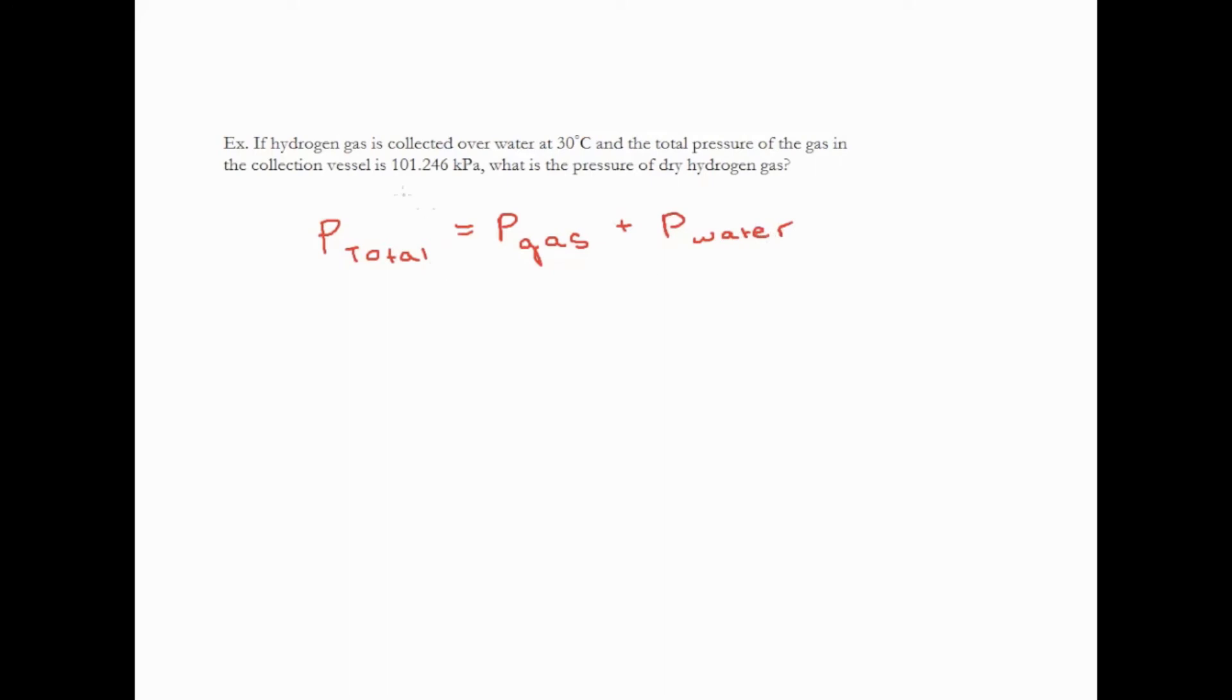And so in this problem it tells me what my total pressure is. It's 101.246 kilopascals. It's asking me to determine the pressure of the gas. So I don't know the pressure of the gas, but what I do know is I know what temperature this is occurring at. And therefore using the table that I provided to you in these notes, you can determine what the vapor pressure is going to be.